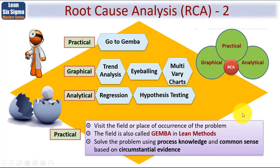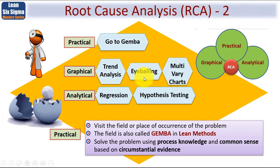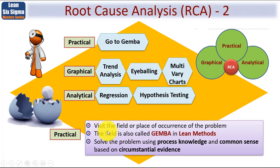There are three techniques: Practical, Graphical, and Analytical. A practical approach is known as Go to Gemba — a Japanese term meaning going to where the process is taking place. This is where you visit the field or place of occurrence of the problem, solving it using process knowledge and common sense based on the circumstantial evidence. This approach is used in lean methods.